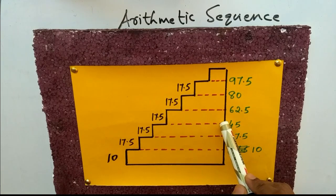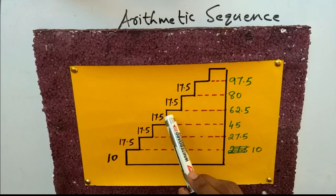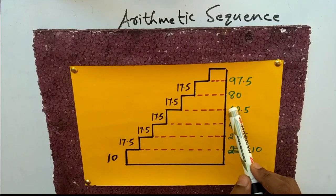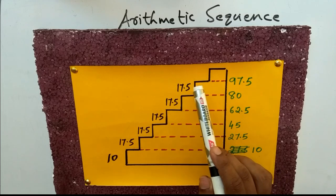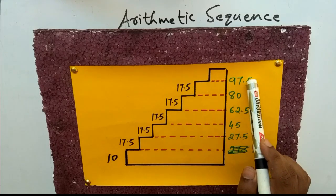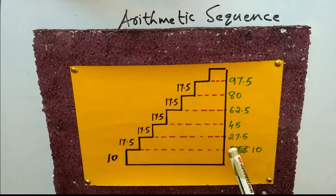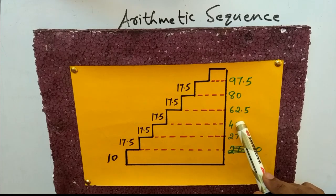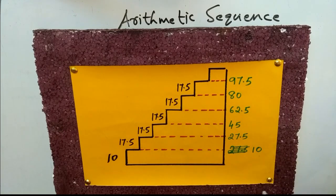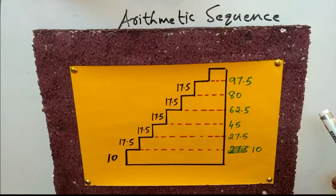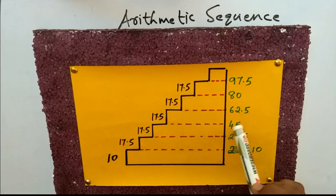Then the sequence is: 10, 27.5, 45, 62.5, 80. This is an arithmetic sequence.